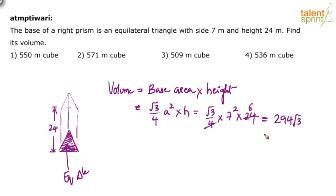Or root 3 is approximately 1.73, so 294 into 1.73, approximate answer. Simplify it. So even if you take, let's say 294 as 300, 300 into 1.7, 300 into 1.7 is 510, approximately 510.